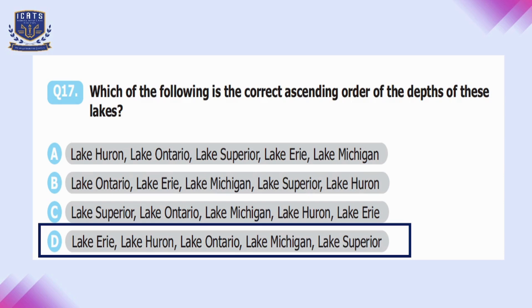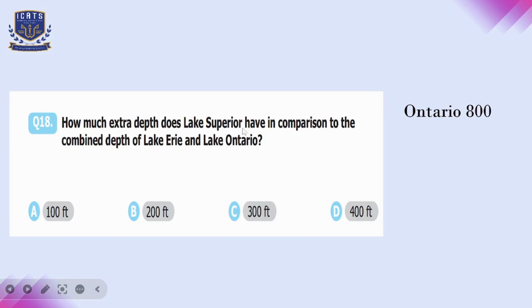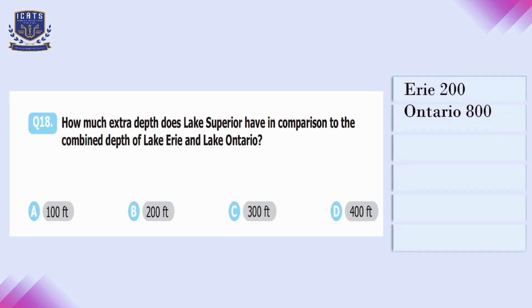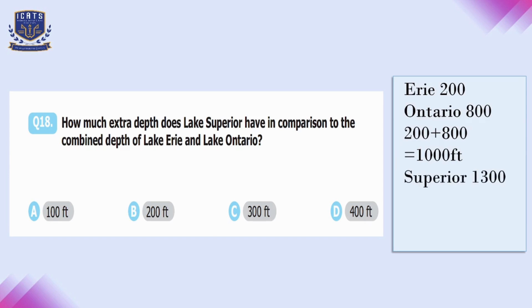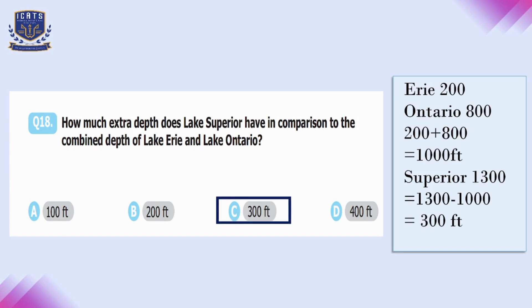Question number eighteen: how much extra depth does Lake Superior have compared to the combined depth of Lake Erie and Lake Ontario? Lake Erie's depth is 200 feet and Lake Ontario's is 800 feet, totaling 1000 feet. Lake Superior is 1300 feet. Subtracting 1000 from 1300 gives 300 feet. Option C is correct.